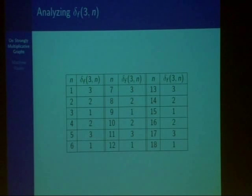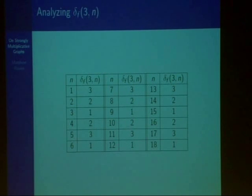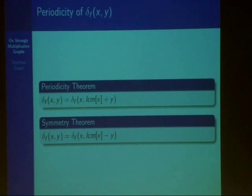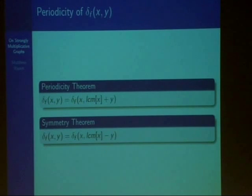Additionally, if you ignore the last number in the period — namely the one — and look at just the first five values, 3, 2, 1, 2, 3, this is symmetric. We can prove both of these results: a periodicity theorem and a symmetry theorem. We're going to let [x] denote the set of all numbers from 1 through x, so the least common multiple of [x] denotes the least common multiple of all the numbers from 1 through x. We obtain the following two relations.